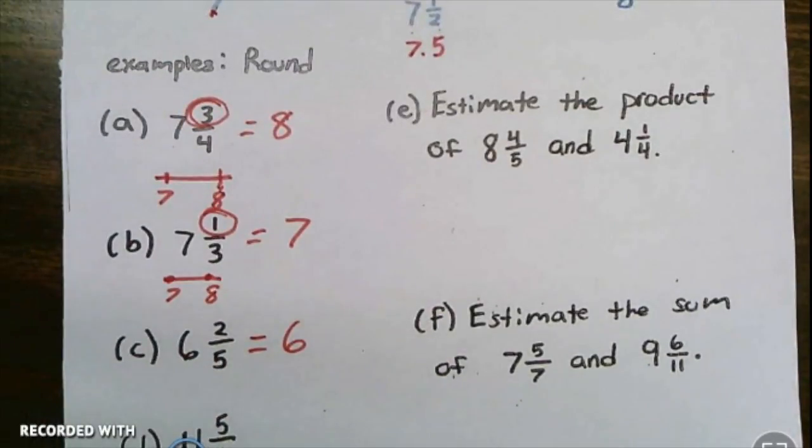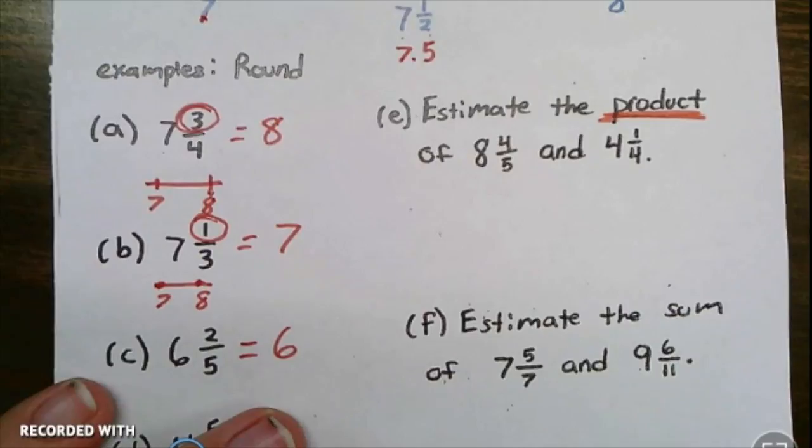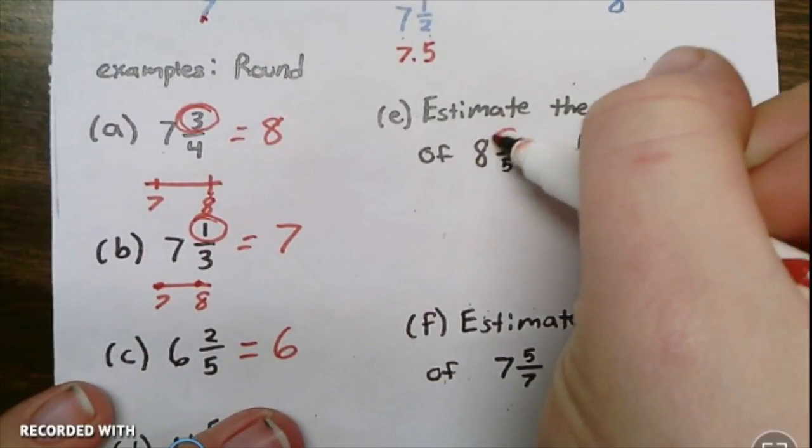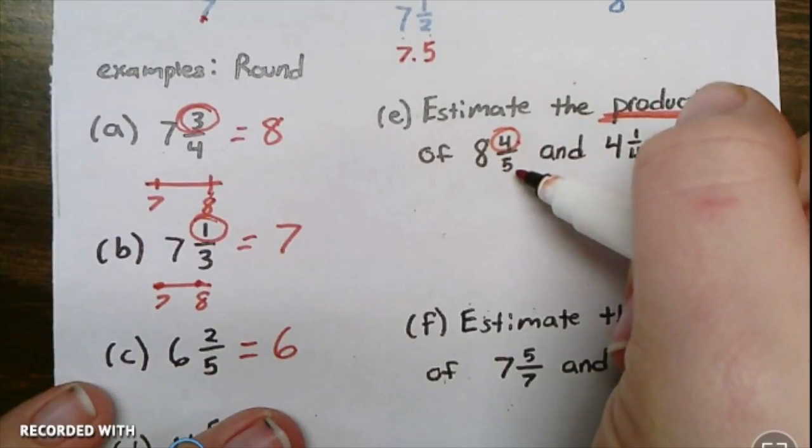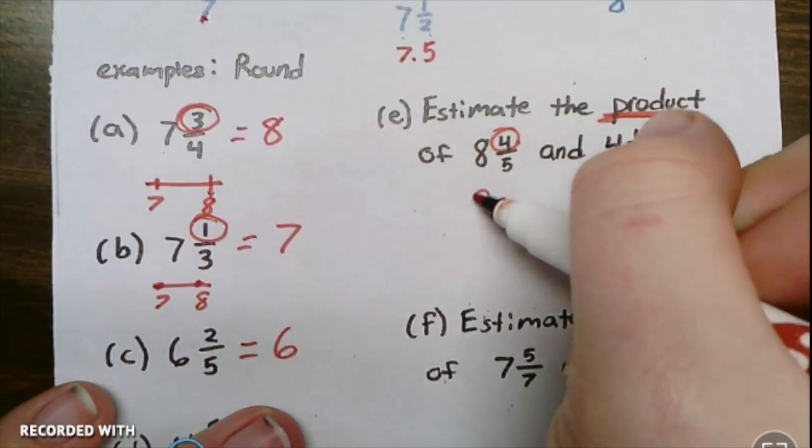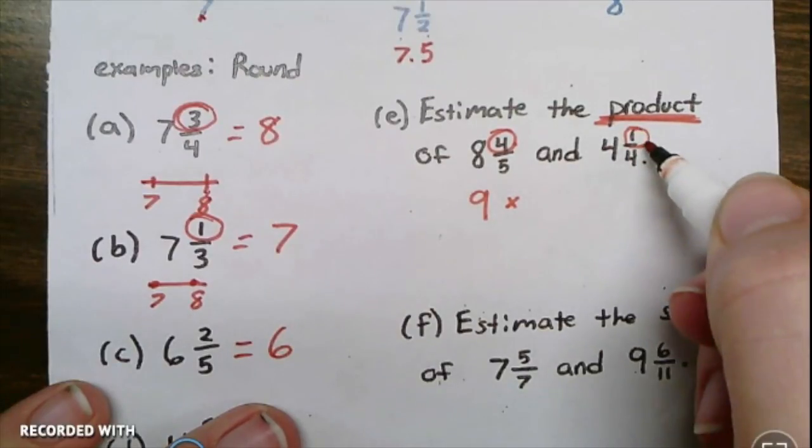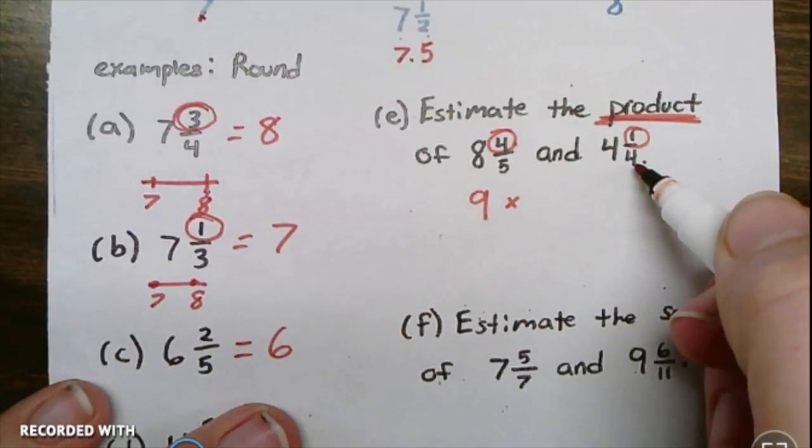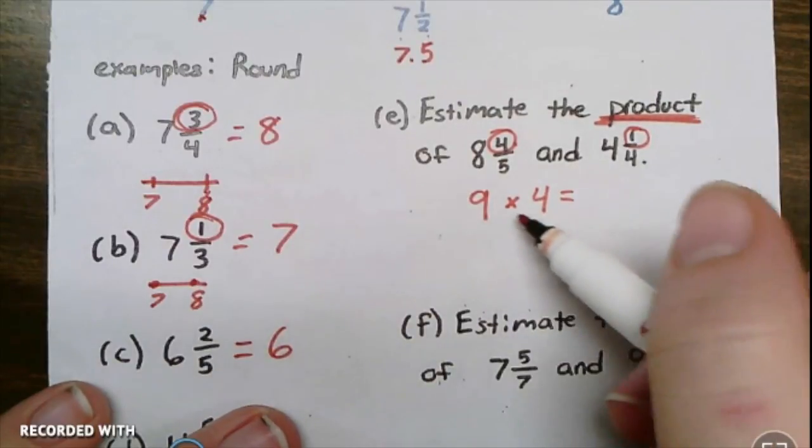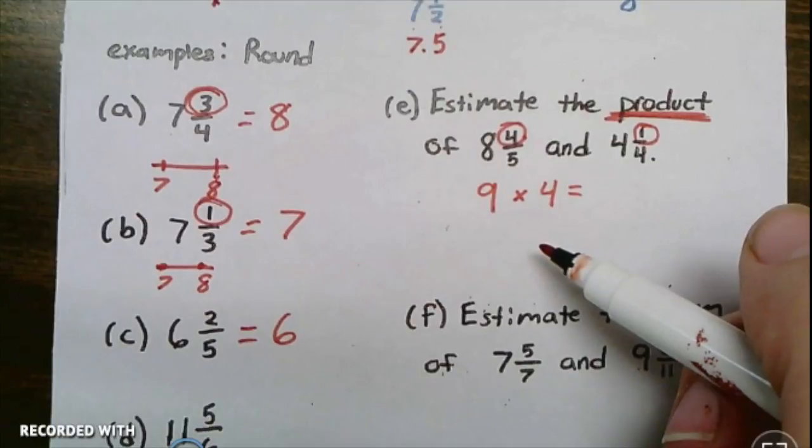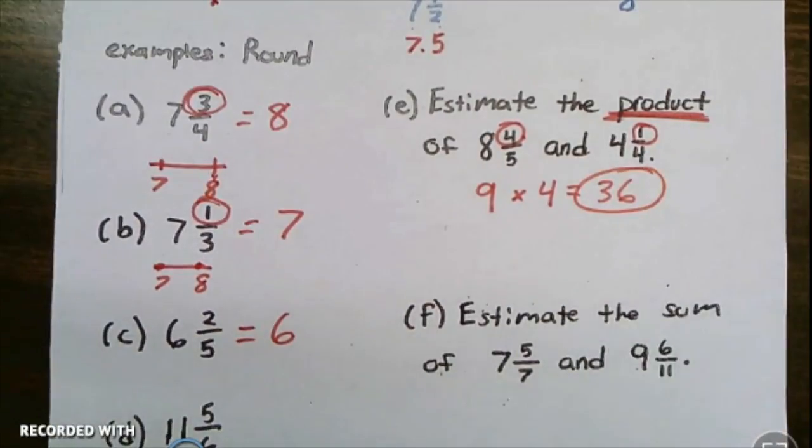Here is what this is useful for. If a question asks you to estimate the product of eight and four-fifths and four and one-fourth, what we'll do is first round those to both be whole numbers, and then we will multiply them because it's asking for the product, which is multiplication. So eight and four-fifths: four is more than half of five, it's more than 2.5, so this is going to become nine. And four and one-fourth: one is less than half of four because half of four is two, so this is just going to stay four. And then nine times four is 36. So there's our answer.